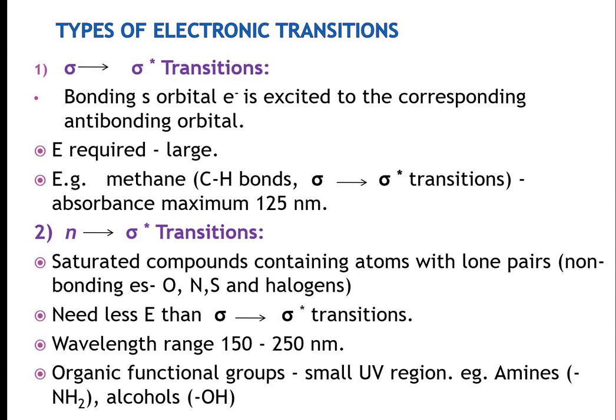There are six theoretical types of electronic transitions, but experimentally four main types are observed: sigma to sigma star, n to sigma star, pi to pi star, and n to pi star. For sigma to sigma star, high energy is required; methane shows this transition with absorbance at 125 nanometers. For n to sigma star, heteroatoms with a single bond are involved; saturated compounds with lone pairs like oxygen, nitrogen, and sulfur give transitions at 150 to 250 nanometers, with functional groups such as amines and alcohols.